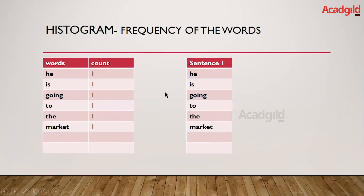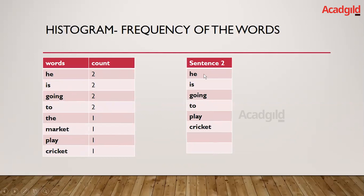The next step is to take sentence two and count its words. Sentence two starts with 'he,' which was already in the table, so the count is incremented to two. Similarly 'is,' 'going,' and 'to' are all incremented to two. New keywords like 'play' and 'cricket' are added to the histogram table with a count of one each.